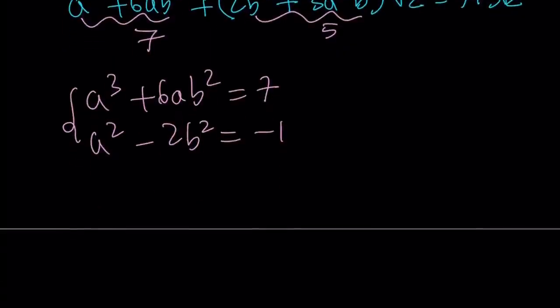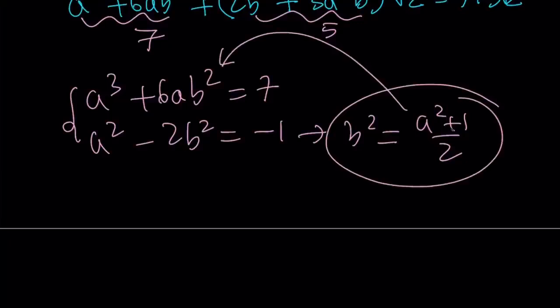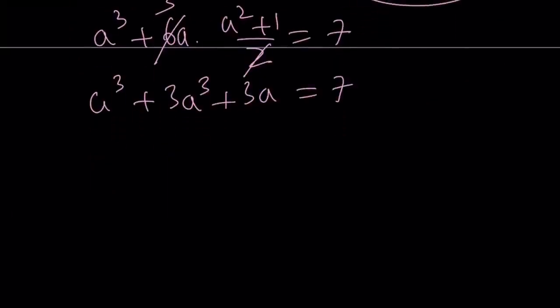But we have a system so we're good. From here I want to isolate b squared and write it as a squared plus 1 divided by 2. And then I want to plug it in here. a cubed plus 6a multiplied by a squared plus 1 over 2 equals 7. 2 goes into 6 three times. This gives me a cubed plus 3a cubed plus 3a equals 7. If you add like terms you get 4a cubed plus 3a minus 7 equals 0.